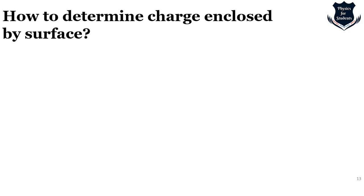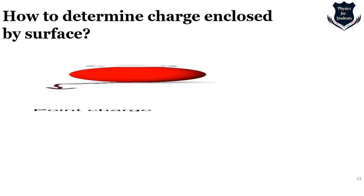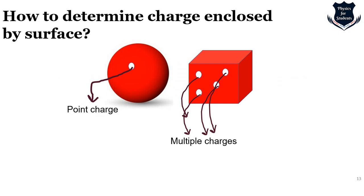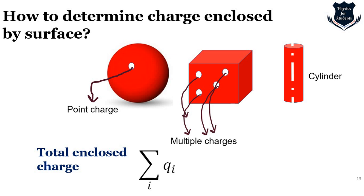Now we come to what is called an enclosed charge. The question is: how do you determine the charge on an enclosed surface? You understand why the right-hand side of Gauss's law involves the enclosed charge — that is, the charge within the closed surface for which the flux can be determined. For discrete point charges, you can simply add those individual charges to get the total enclosed charge.